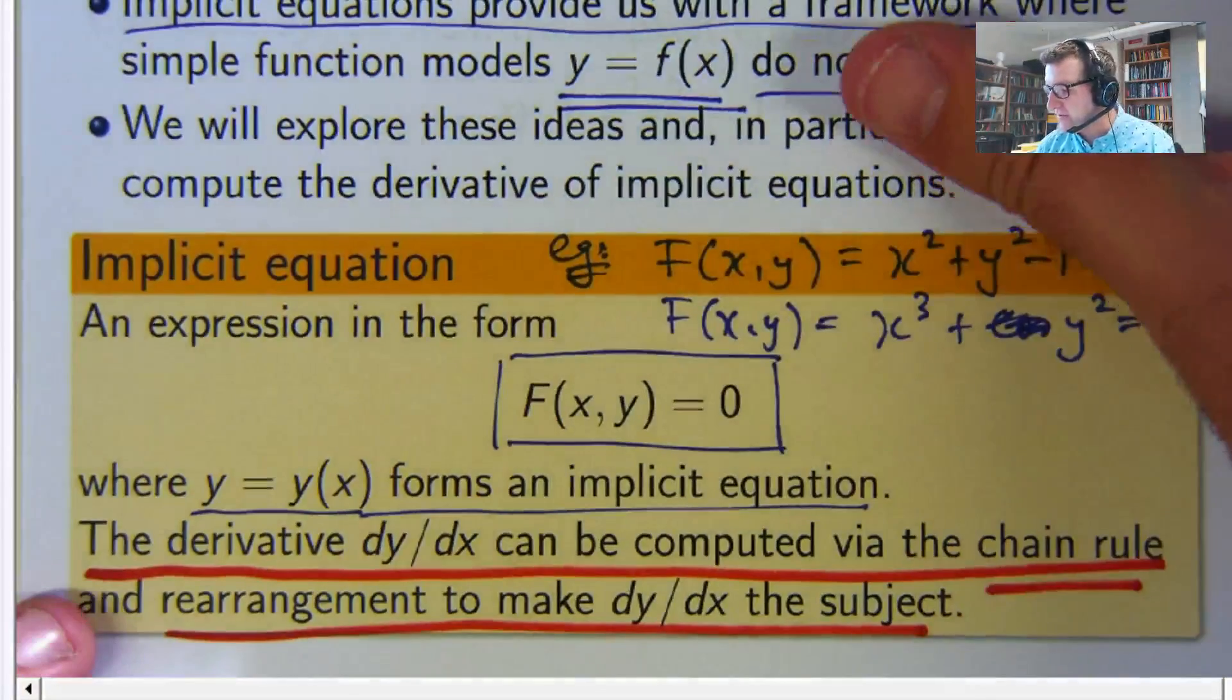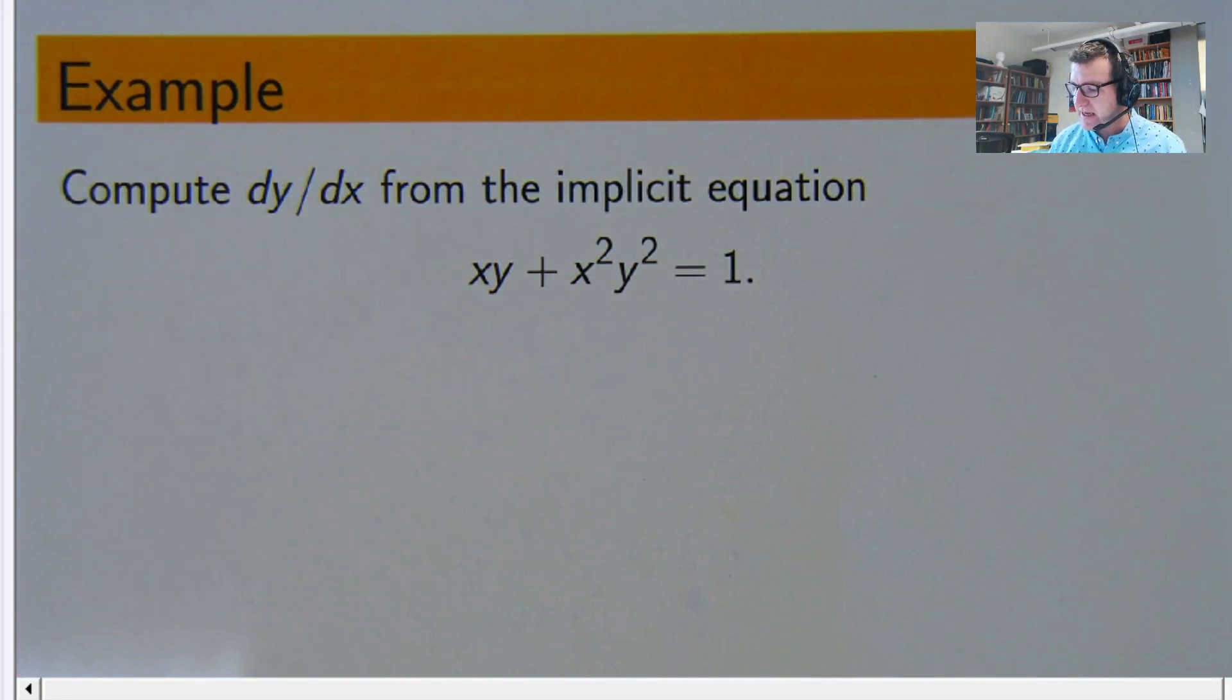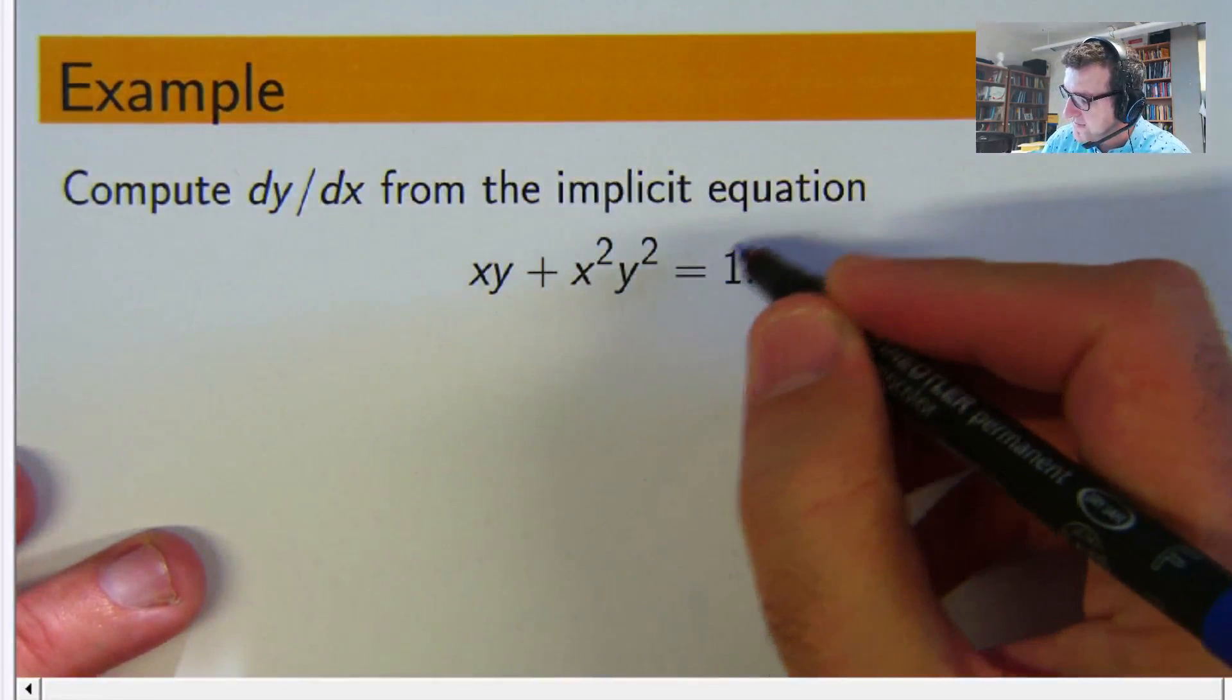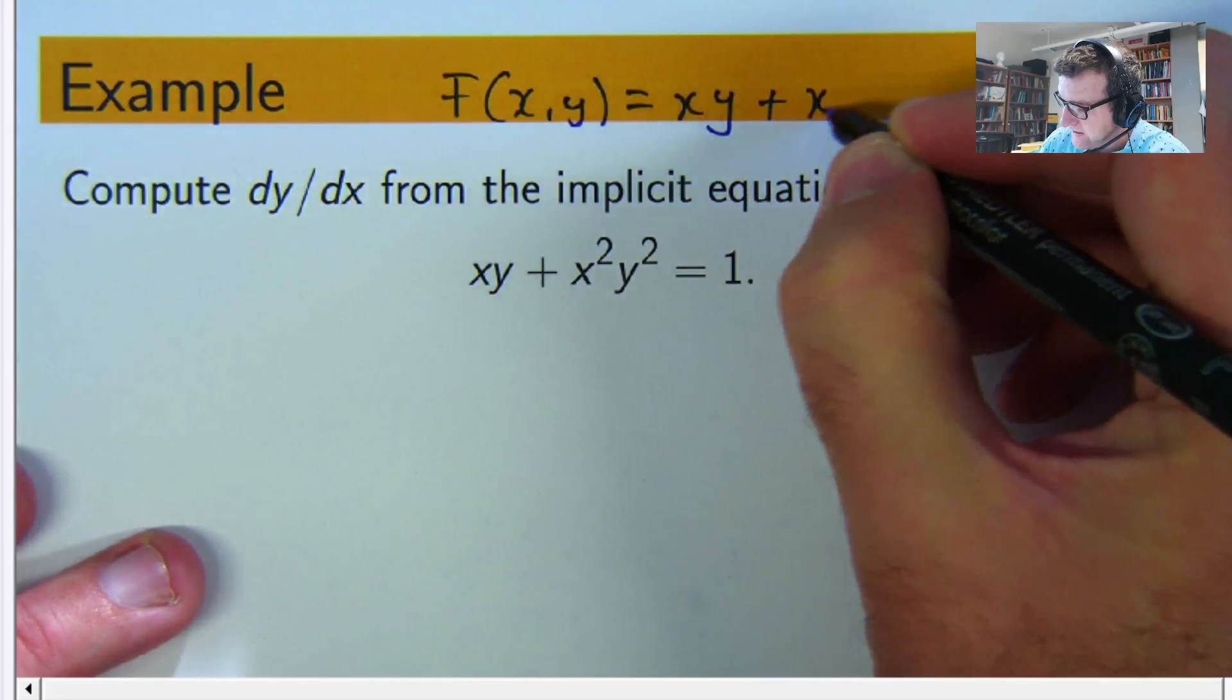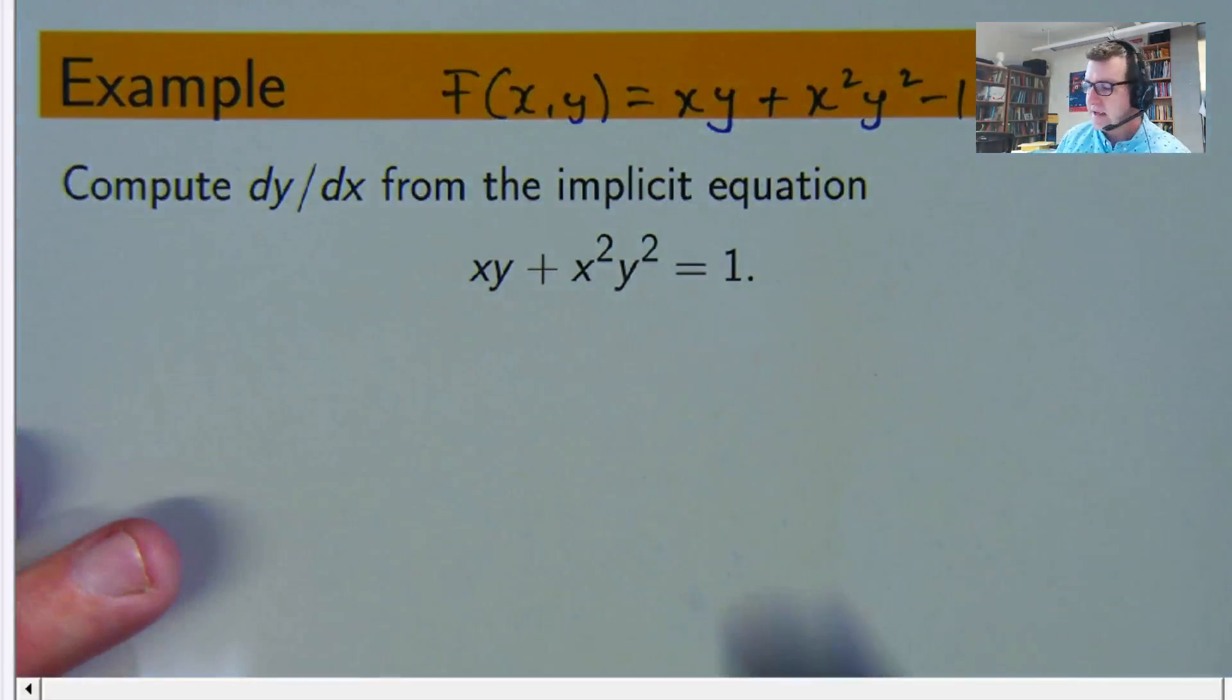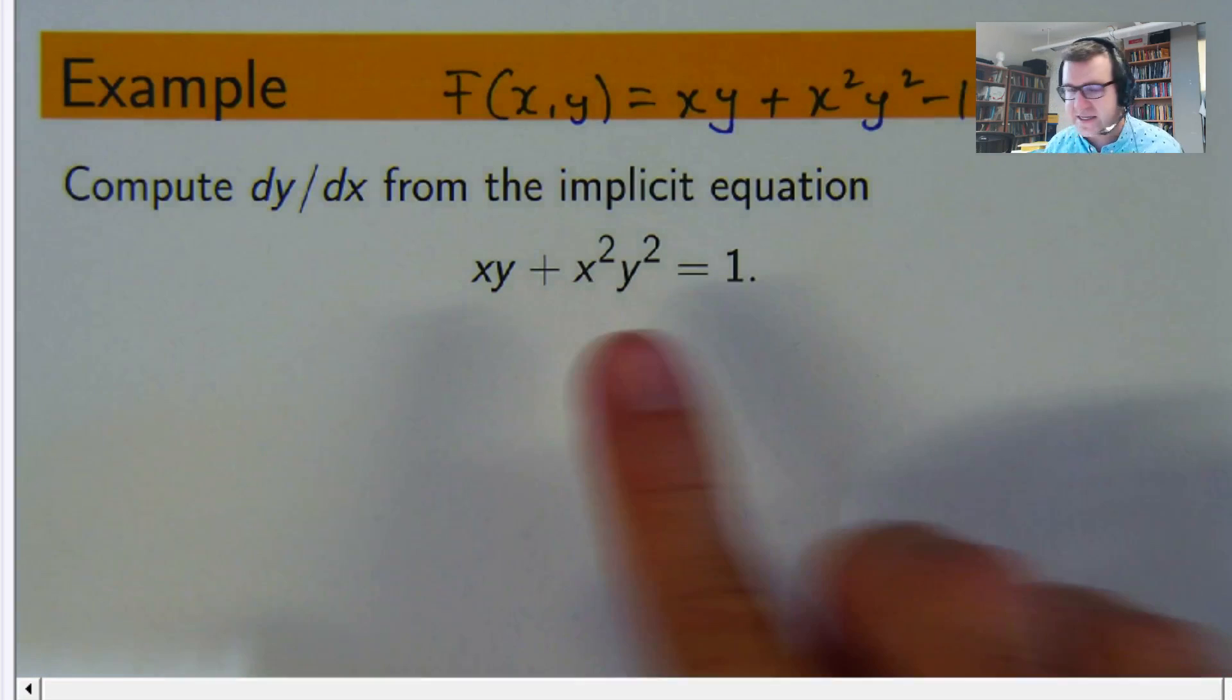So let me give you a slightly more involved example for this video. We are given this as our implicit type equation here. You might say, well it doesn't have a zero over here, but if you want to, you can write it like this, just by moving the constant around. Now, in our process of differentiating both sides, this constant makes no difference to the derivative.